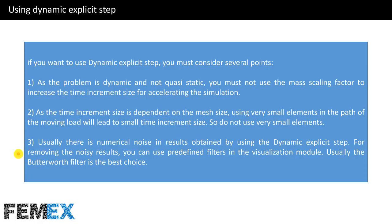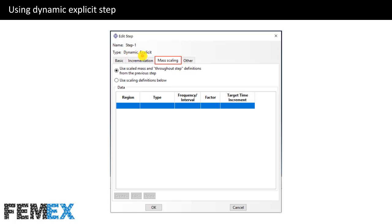Usually there is numerical noise in results obtained by using the dynamic explicit step. For removing noisy results you can use predefined filters in the visualization module. Usually the Butterworth filter is the best choice — in the visualization module there are several predefined filters, for example the Butterworth filter, the Chebyshev filter, and the SAE filters, but for this kind of problem the Butterworth filter is the best choice. When defining the dynamic explicit step in the mass scaling tab, please do not define any mass scaling factor.